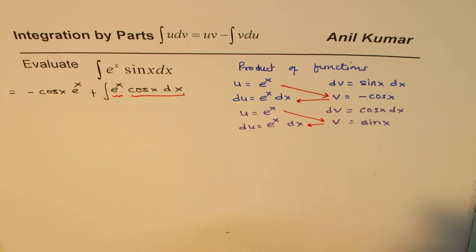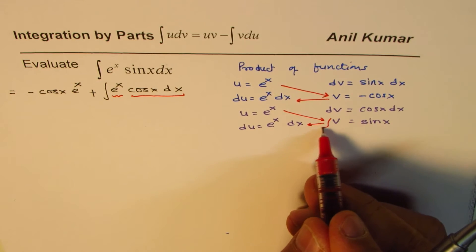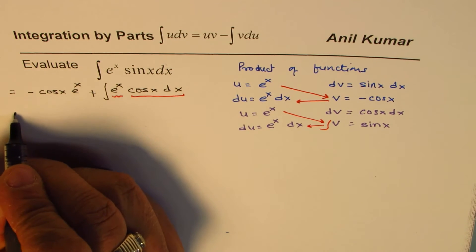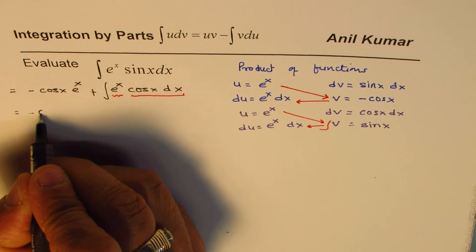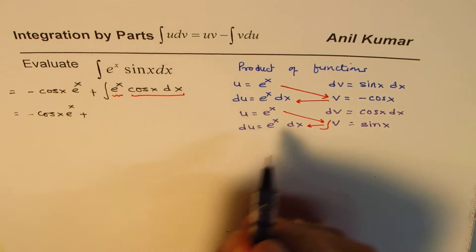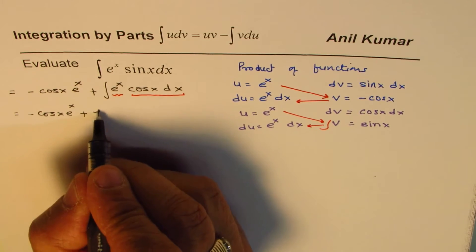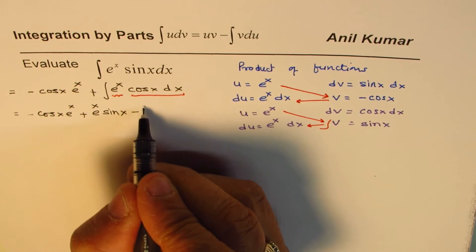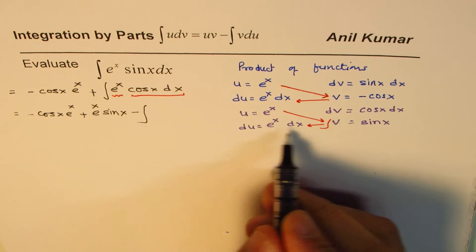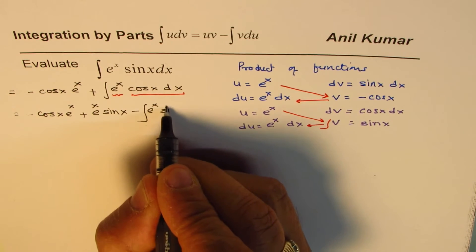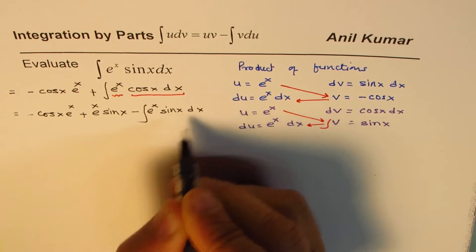Multiply these and take away this integral. So let's do that and rewrite the given integral. We could write this as minus cos x e to the power of x, and here we'll do plus. Product of these two is e to the power of x sin x, and minus integral of this and this, which is e to the power of x sin x dx.